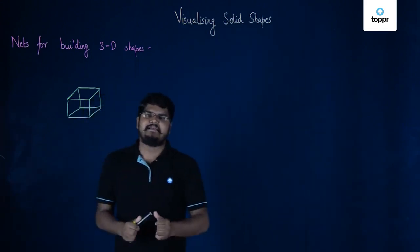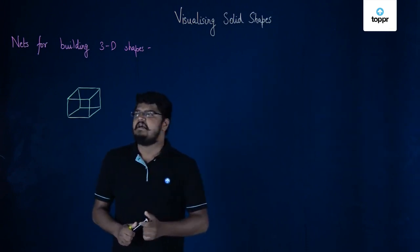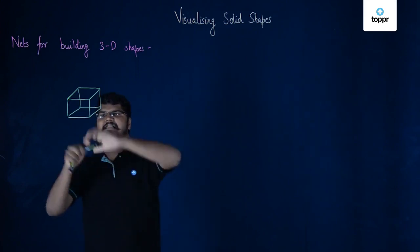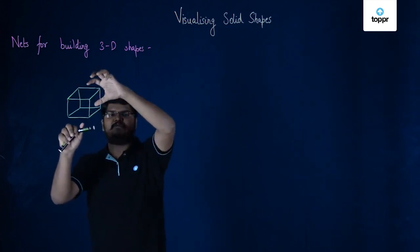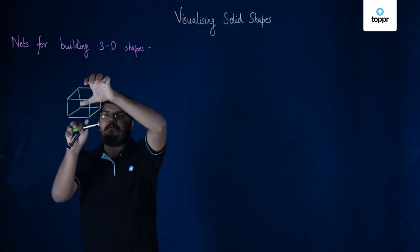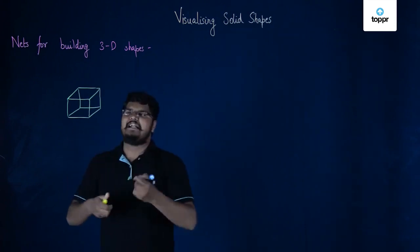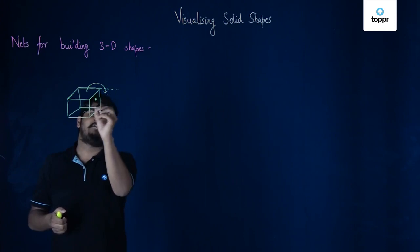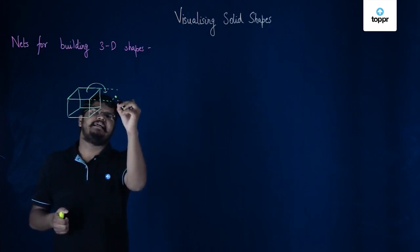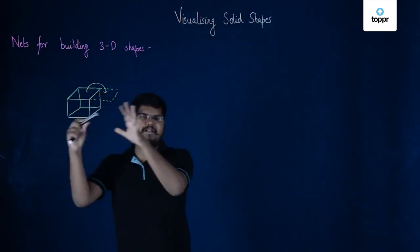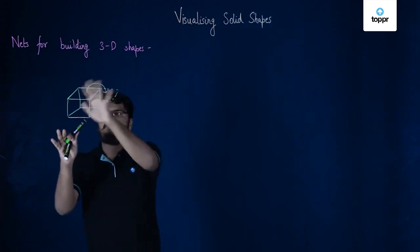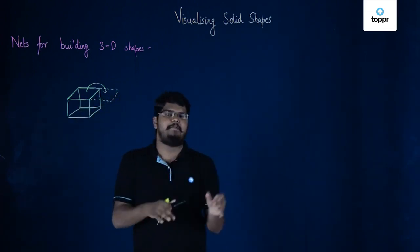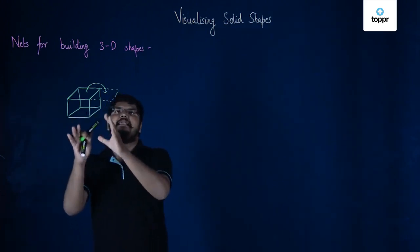An important thing here is to understand what the word 'net' means. If I take a cube and deconstruct it — when I say deconstruct, I mean this particular square is basically a plane and I'll just open it. That way this face will be flipped along this side. If we open it completely and place it over a plane, then that particular structure formed on that plane is called the net diagram of this cube.